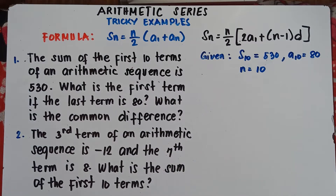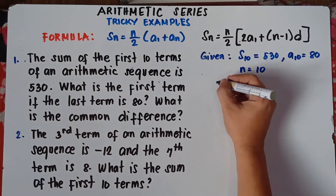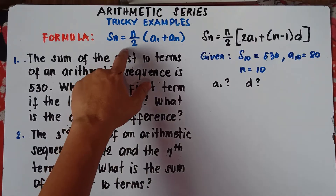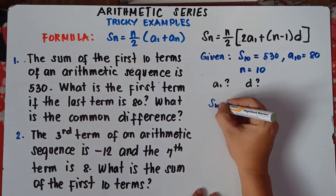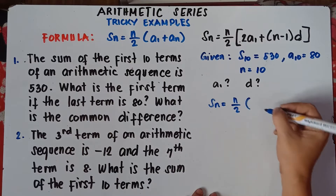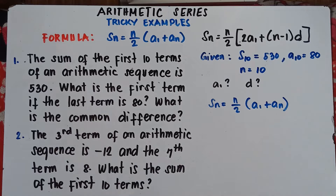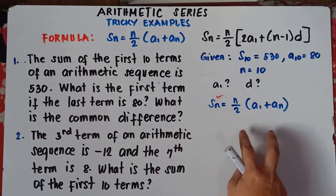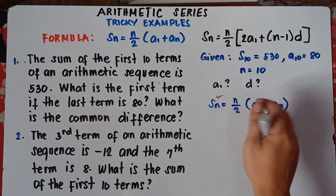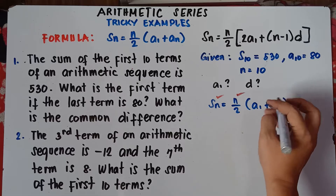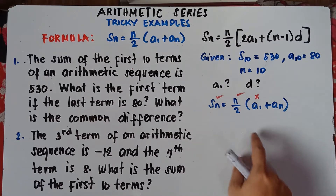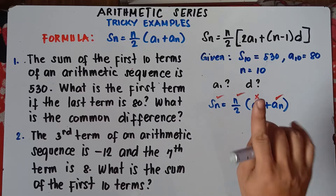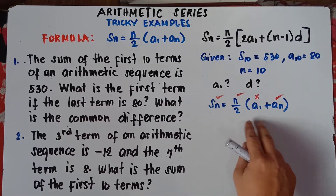We are asked to find the first term and the common difference. Let's check if we can use the first formula: S of n equals n divided by 2, times quantity first term plus last term. We have the sum, we have n, we don't have the first term — that's what we're solving for — but we do have the last term. So we only have one unknown, which is the first term. Therefore, we can use this formula.